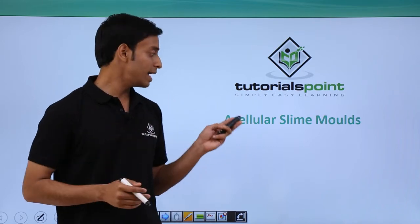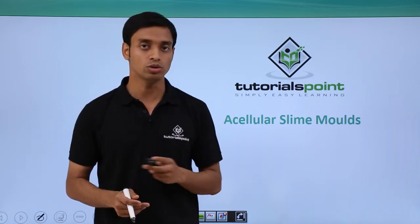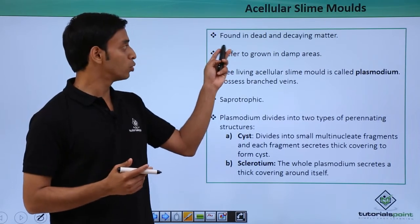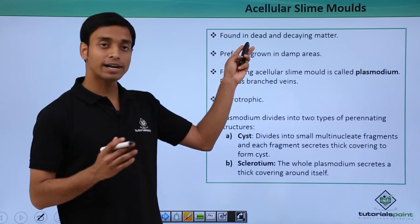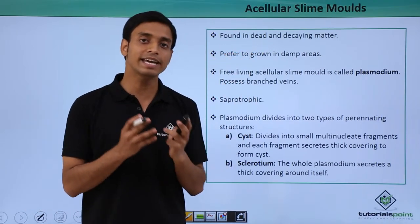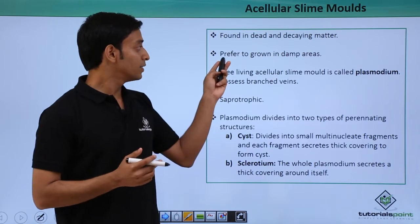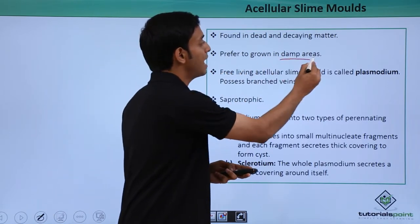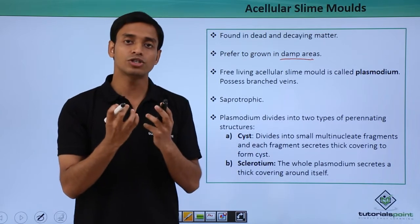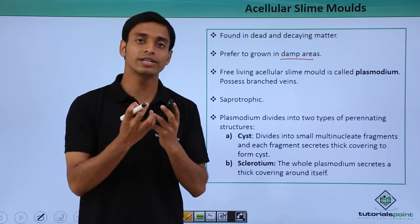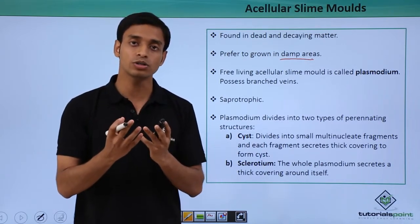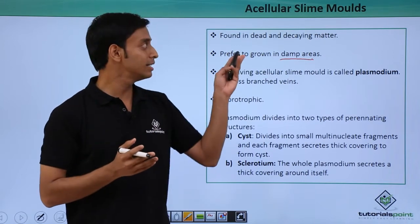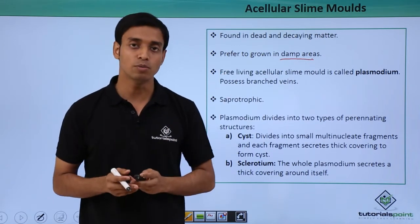So what are acellular slime molds? These are groups which are mostly found around dead and decaying organic matter. They actually prefer to grow around damp areas, so wherever moisture or water is present in higher amounts, those are the areas favored by this type of acellular slime molds.